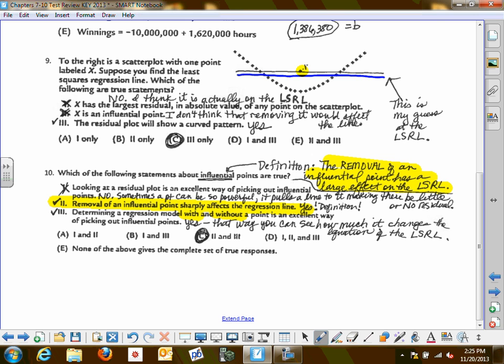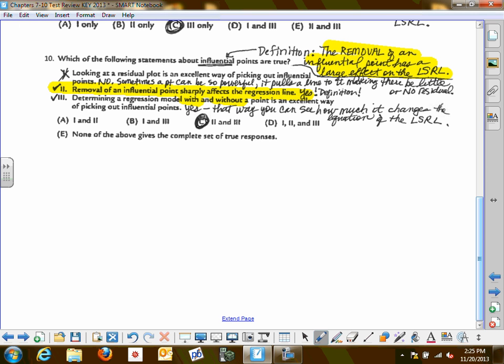But let's talk about this number one. It says looking at the residual plot is an excellent way of picking out an influential point. And so I want to give you an example of when that's not the case to demonstrate why one is not a true statement. Let's think back to the problem that we had about shoe size and IQ. Is there a relationship between your shoe size and your IQ? What do you think? I don't think so. This is pretty much going to be a flat, straight across line because there's no linear correlation between shoe size and IQ.